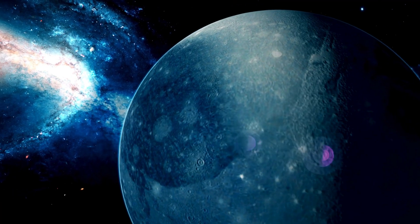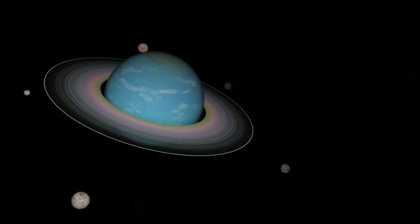Uranus, the cold, tipped planet. Uranus is an icy blue planet that spins on its side. It's far from the sun and very cold.